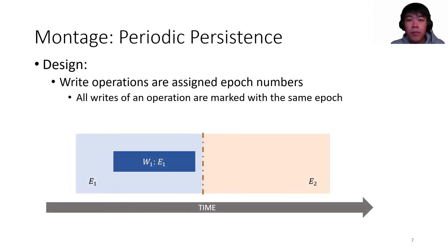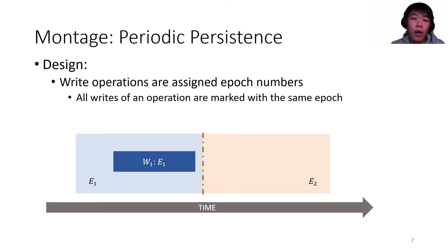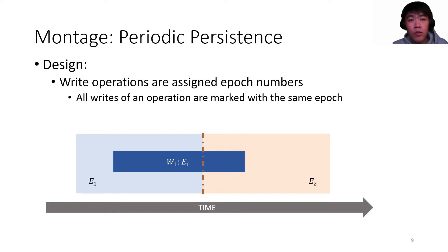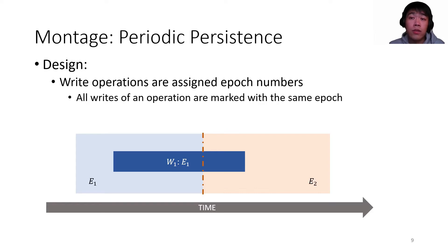The epoch-based periodic persistence of Montage is designed as follows. All write operations are assigned epoch numbers, read from a persistent slow-ticking epoch lock. In one write operation, all writes to persistent memory are marked with the same epoch number, so operations are linearized with epoch boundaries. This is important because the data structure is persisted in the granularity of epochs — if updates of an operation are marked with a different epoch, the operation is not guaranteed to be failure atomic. Read-only operations have nothing to persist so they don't need epoch numbers, but they are still linearized with some other operations and can always find an epoch to linearize in.